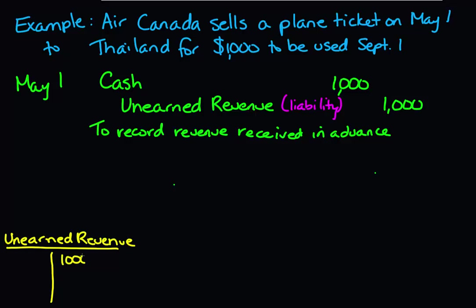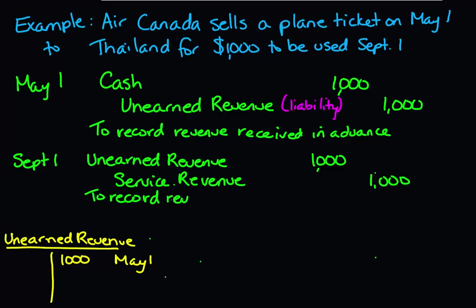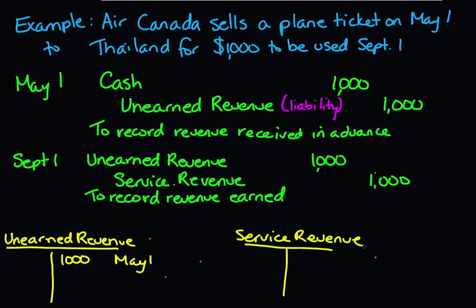On September 1st, when the customer actually flies to Thailand, we have fulfilled our obligation to that customer. When we've actually performed the service — in this case, the flight over to Thailand — we can record the revenue as being earned. Our journal entry is going to look like this: we're decreasing our unearned revenue by debiting it for $1,000, the full amount of the ticket, and that amount is being taken to the income statement as revenue on September 1st. The balance in the unearned revenue account is $0 on September 1st because that amount has now been transferred to revenue as we have earned it.